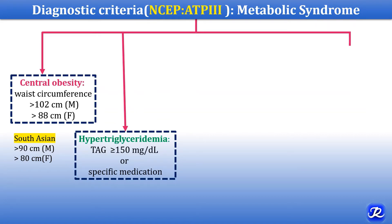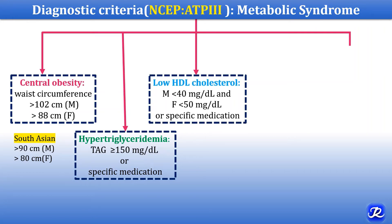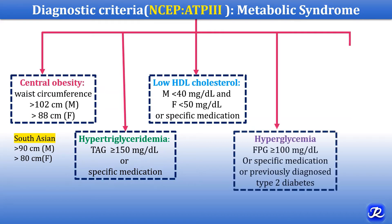The second criterion is the presence of hypertriglyceridemia — if triglyceride values are more than or equal to 150 mg per deciliter, or if the person is on specific medication for hypertriglyceridemia. The third is presence of low HDL cholesterol: in males if HDL is less than 40 mg per deciliter, and in females if it is less than 50 mg per deciliter, or if the person is on specific medication for low HDL. The fourth is presence of hyperglycemia — if fasting plasma glucose is more than or equal to 100 mg per deciliter, or if the person is on specific medication for hyperglycemia or previously diagnosed with type 2 diabetes.